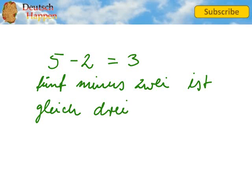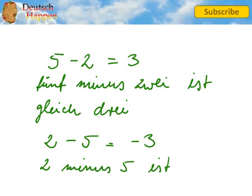The other way around, zwei minus fünf ist gleich minus drei.